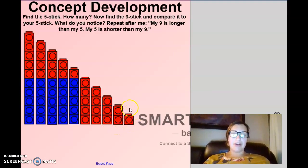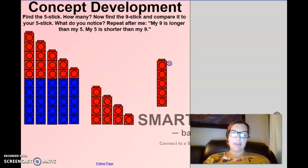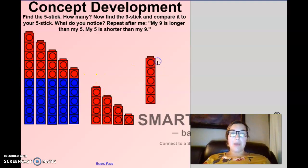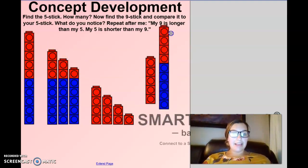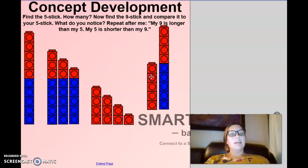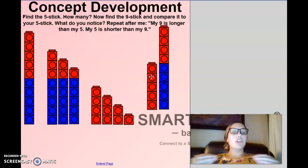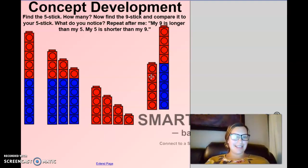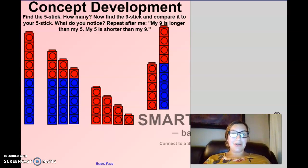My five stick is longer than my four stick, which makes sense because five is bigger than four. So we have one more cube on top. One more cube on the five stick. What about, how can we switch that sentence? My what stick? My four stick is what? Shorter or longer? Shorter than my five stick. Okay. Let's count up the ladder and pull out that five stick again. One, two, three, four, five. And then we need a seven stick. So we're at five here. Six, seven.